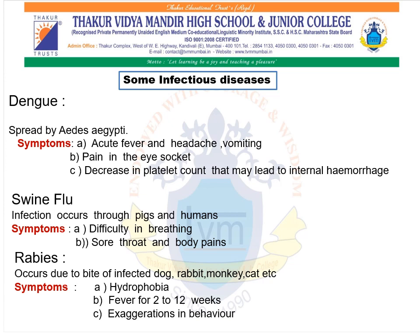Next, we are going to study about rabies. Rabies is a viral disease, and it occurs due to the bite of an infected dog, rabbit, monkey, cat, etc. The symptom of rabies is hydrophobia — a condition in which the patient shows extreme fear for water — along with fever lasting 2 to 12 weeks and exaggeration in behavior. Rabies is also a fatal disease, and this fatality can be prevented by timely vaccination before the onset of symptoms.